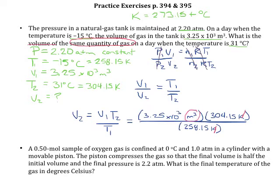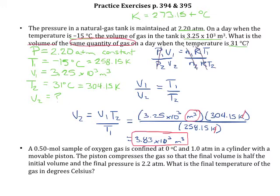The units of Kelvin cancel, leaving units of cubic meters. Putting this into the calculator and rounding to three significant figures gives a final answer of 3.85 times 10 to the third cubic meters. We should check that the answer is reasonable: the volume went up from 3.25 to 3.85 times 10 to the third. Volume and temperature have a direct relationship, so if volume went up, temperature should have gone up too — and indeed the temperature increased from negative 15 to 31 degrees C. The answer is reasonable.